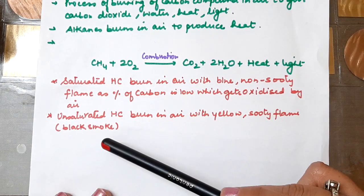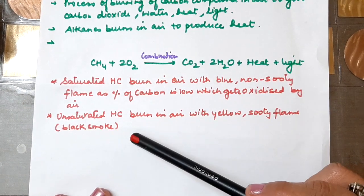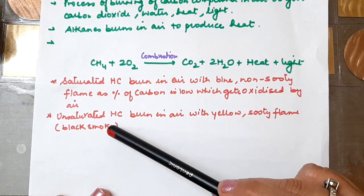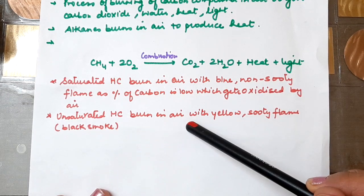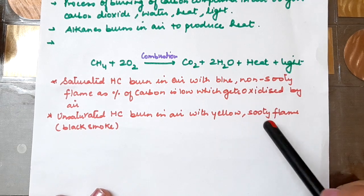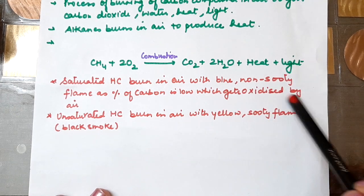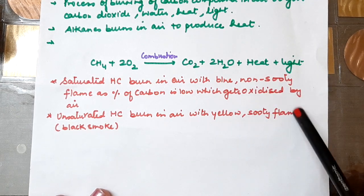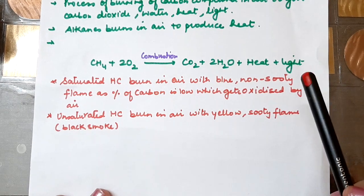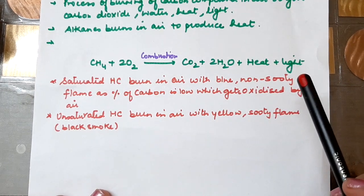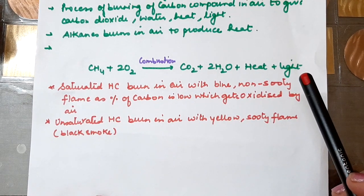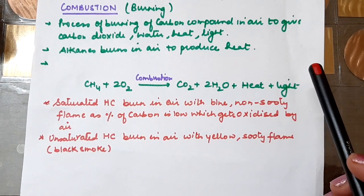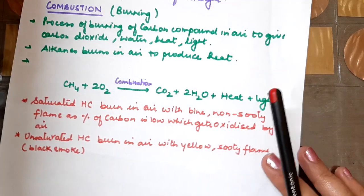Moving on to unsaturated hydrocarbons: when they burn in air and combustion occurs with oxygen, they give a yellow sooty flame. A sooty flame means black smoke — so unsaturated hydrocarbons produce black smoke. Now let's move on to addition reactions.